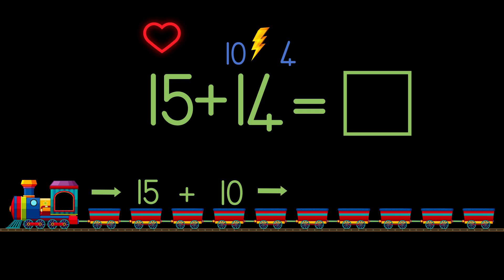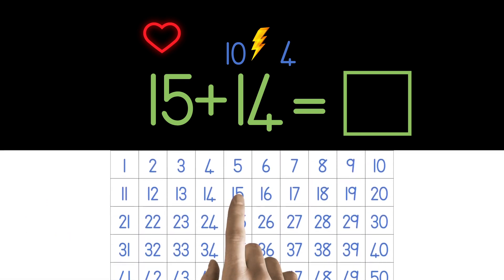We have to think of the answer to the first bit of the sum. This is not the final answer, it's just the first bit. And we are going to write it down after the arrow. So we need to write down the answer to 15 plus 10. To help you, you can use your number chart.